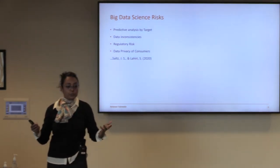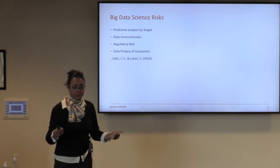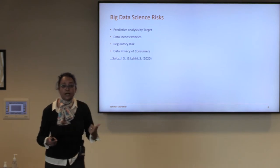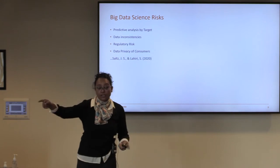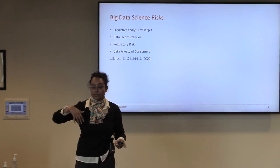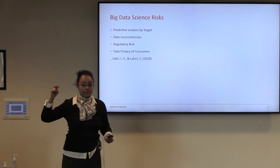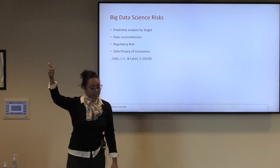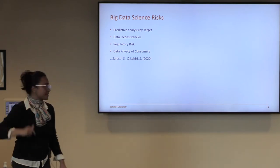One example was the Target incident. A woman shopper goes to Target, and with the help of big data predictive analysis, Target predicts she is pregnant and sends marketing material to her family residence — news she had not yet revealed to her family. From this example, we can gauge that there is a privacy risk, a reputational risk, and a personal risk.